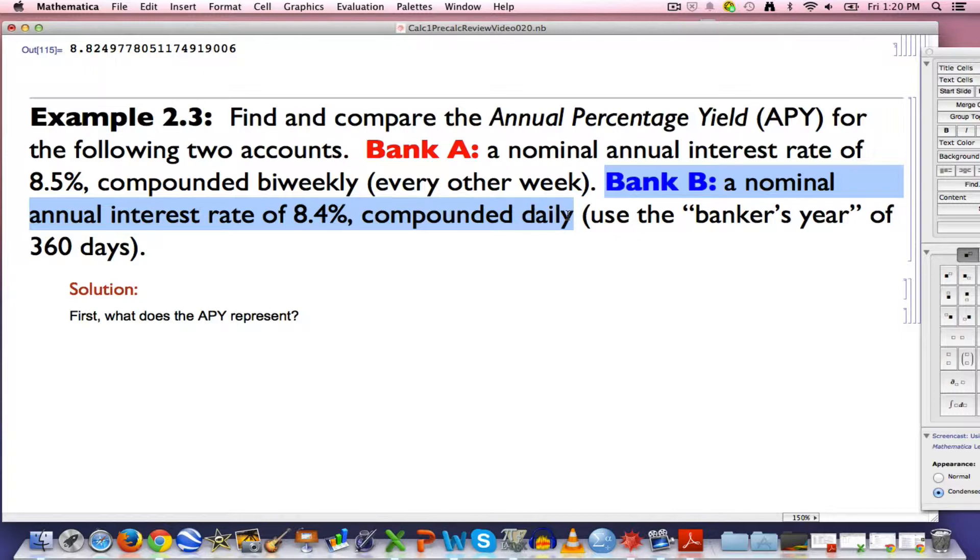Bank B has a nominal annual interest rate of 8.4%, a lower nominal interest rate, but compounded many more times per year, compounded daily. You could use n as 365, or even use a fractional value, 365.25. But they typically use what's called the banker's year, which is 360 days.